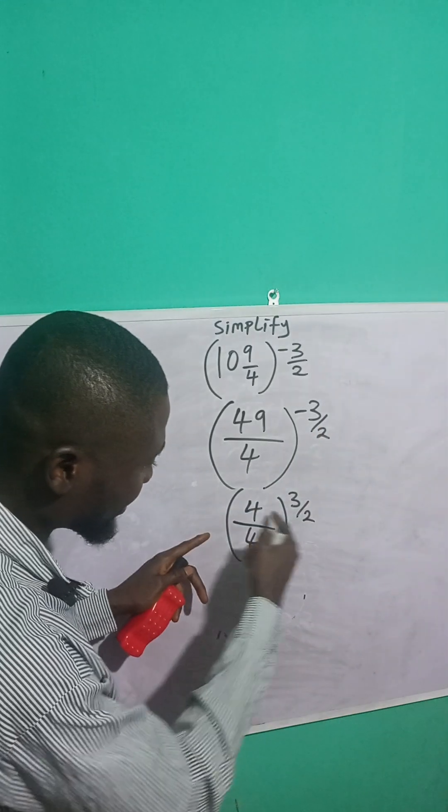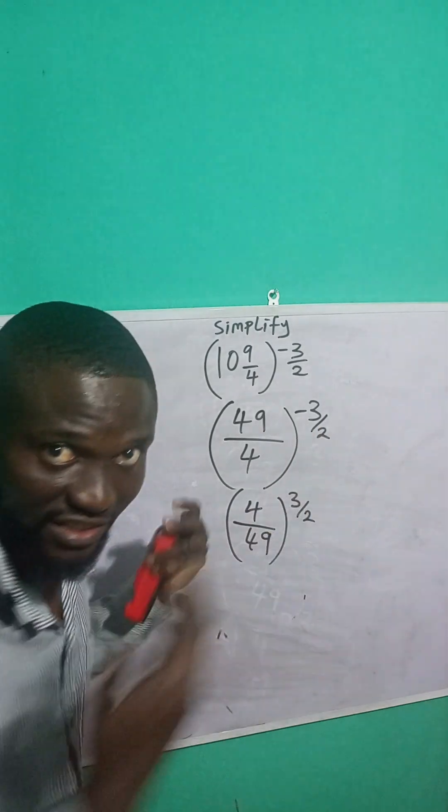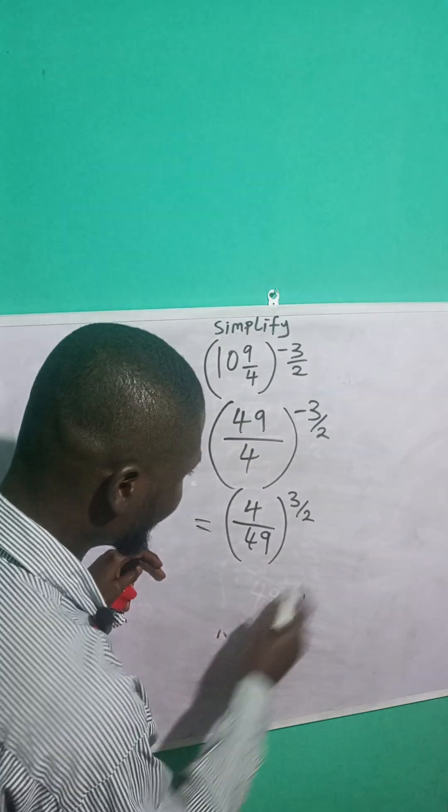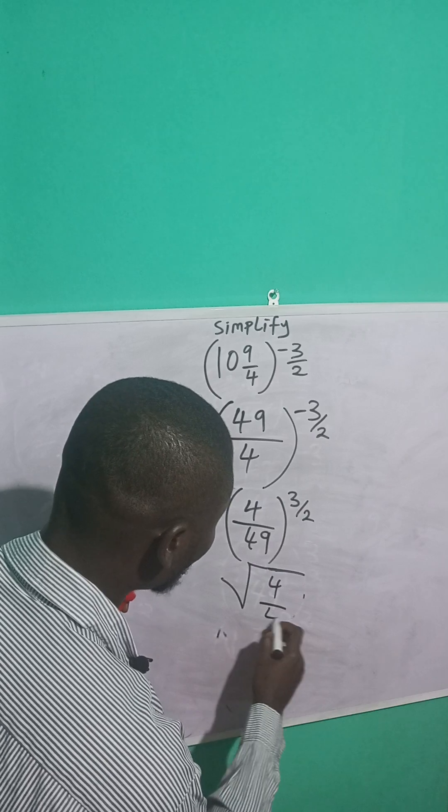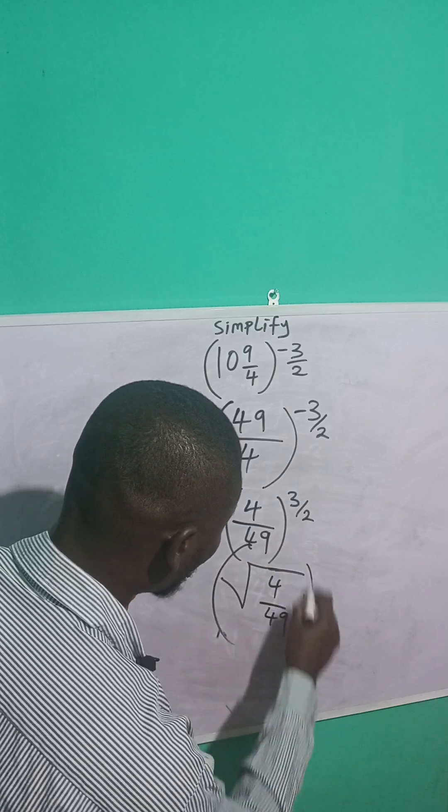Now, do you know that this 2 can be written as the square root of this? While this 3 is the power? Let me demonstrate this thing here. So this becomes the square root of what? 4 over 49. All raised to the power of what? 3.